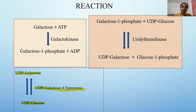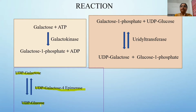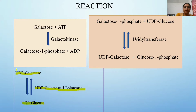When galactose is used as a carbon and energy source, it is converted to UDP-glucose, then to glucose-1-phosphate, entering glycolysis. When galactose is needed for cell wall synthesis, galactose is converted to UDP-galactose — and UDP-glucose can also be converted to UDP-galactose by epimerase — so UDP-galactose is made available for cell wall synthesis.